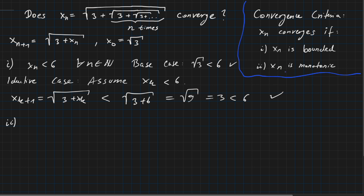Regarding the second statement of our criteria, we want to prove that x_n is monotonically increasing. The intuition is visible: we always have √3 and add positive numbers, so x_1 > x_0 = √3. Our guess is that x_{n+1} > x_n for all natural numbers, and we will prove this again by induction.